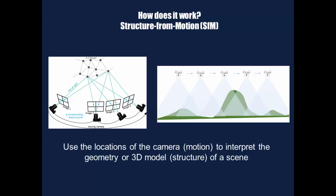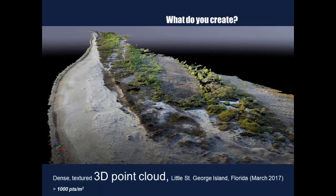We're simply putting cameras and sensors onboard the UAS, doing the same thing — using the drone to acquire overlapping data — and then recreating a 3D model of the scene. That's the real power behind it. The base product you get from structure from motion is what we call a dense textured 3D point cloud. For example, here's a survey we did of a nine-mile beach at Little St. George Island, Florida — over 1,000 points per square meter. That means very dense, very accurate measurements where I can get elevations, tree heights, and track how things change over time.